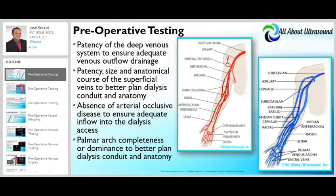Before fistula creation, it is very important to perform pre-op vessel mapping. This test allows the doctor to know about patency of the deep venous system, whether there are any obstructions or stenosis that would affect volume flow in dialysis of the arterial system, and also provides information about palmar arch completeness or dominance to better plan for the dialysis conduit.